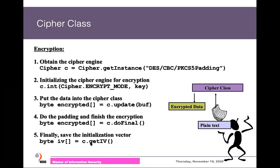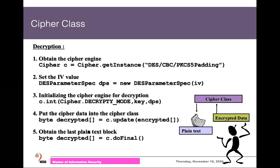For decryption in CBC mode, since we need the initial vector, we call getIV and save it. On the recipient side, we load the same cipher instance, use IVParameterSpec passing the saved IV, and initialize the cipher in decryption mode with the key and the IVParameterSpec. We then call the update method with encrypted data, and call doFinal to return the final block with padding removed. That is how we do encryption and decryption in CBC mode.